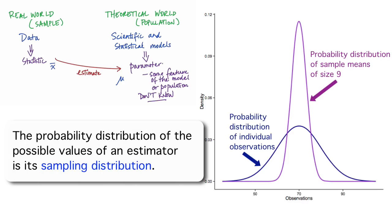The probability distribution of the sample means is called a sampling distribution. In general, a sampling distribution is the probability distribution of the possible values of an estimator of a parameter. In real life, we only observe one sample and get one sample mean. But if we make some assumptions about how the individual observations behave — that is, about the probability distribution of the individual observations — then that tells us what the sampling distribution of the mean is.